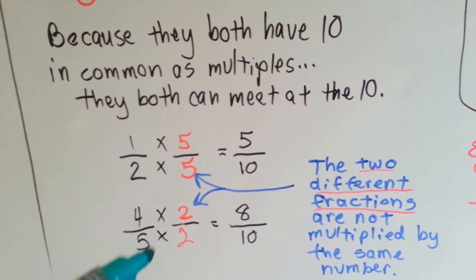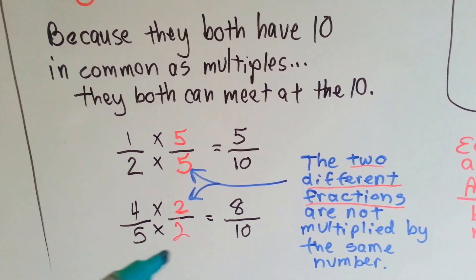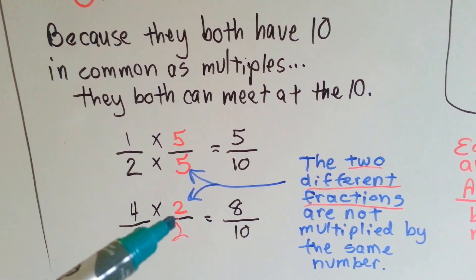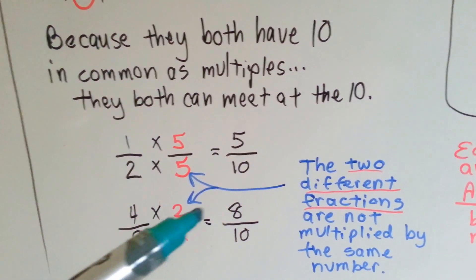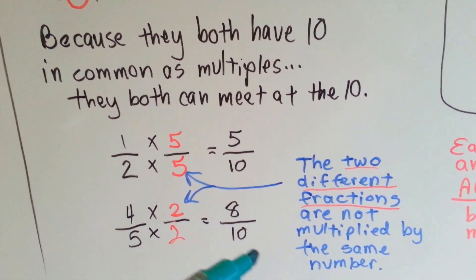Now, the 5, what does it need to become a 10 to meet at the 10's house? It needs to be multiplied by 2. 5 times 2 is 10. The numerator gets jealous, so it gets multiplied by 2. 4 times 2 is 8. So now they have the same denominator, 5 tenths and 8 tenths.